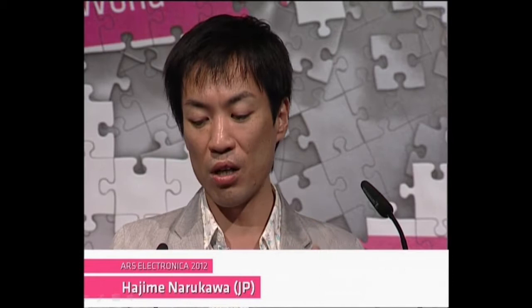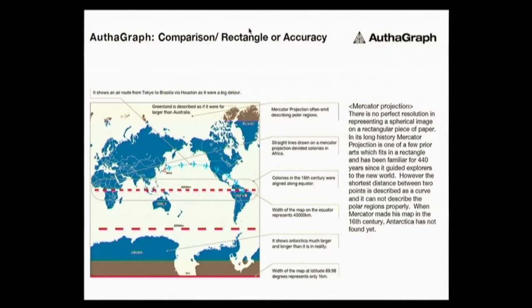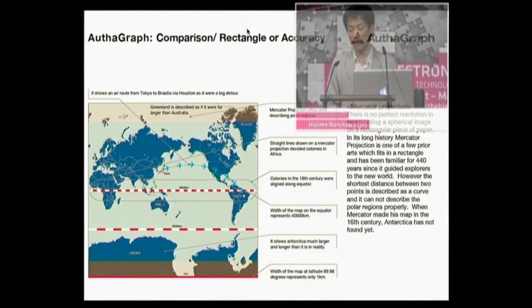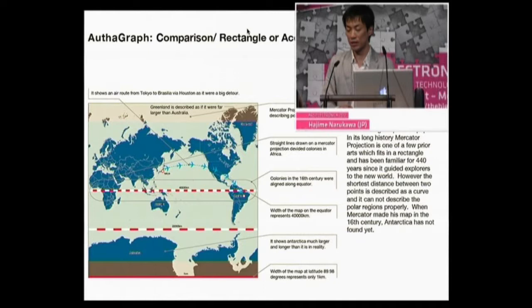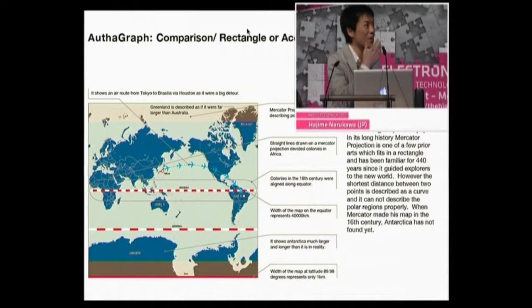Sehen wir uns zwei ältere Kunstwerke an, anhand derer ich erklären möchte, warum ich eine neue Weltkarte entwickelt habe. Wir müssen uns darüber im Klaren sein, dass es keine perfekte Lösung gibt, wenn wir ein sphärisches Bild auf einem zweidimensionalen Papier wiedergeben wollen. Es gibt immer Verzerrungen in allen Weltkarten. In der langen Geschichte der Kartografie ist die Mercator-Projektion ein frühes Beispiel, das wir seit 440 Jahren kennen – eine Darstellung auf Papier, die den Seefahrern zu großen Entdeckungen verhelfen sollte. Die erste Herausforderung für eine Weltkarte ist, die kürzeste Entfernung zwischen zwei Punkten aufzuzeigen.